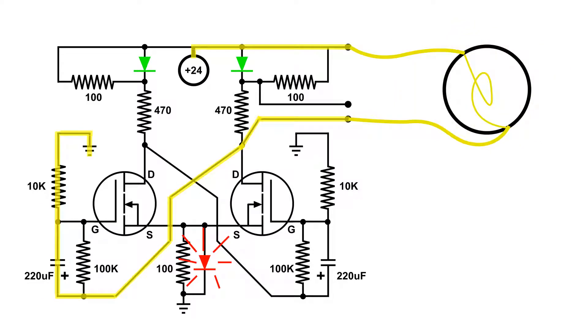This is showing the path that charges the 220 microfarad capacitor on the left side, and that is eventually going to turn off the left MOSFET.